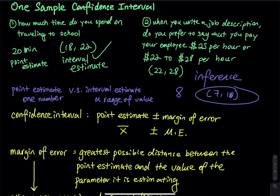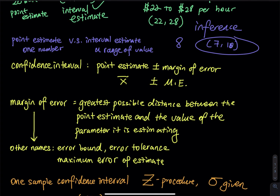So what is confidence interval? The way we build a confidence interval is we use a point estimate plus or minus margin of error. The margin of error we call ME. The point estimate we call X bar, which is the sample mean. You start with a number and then plus or minus the margin of error. Going back to the previous problem: you spend eight hours to study for the final and your margin of error equals two. So that will be eight plus or minus two. The lower limit is eight minus two equals six, and the upper limit is eight plus two equals ten. So we just created an interval estimate.